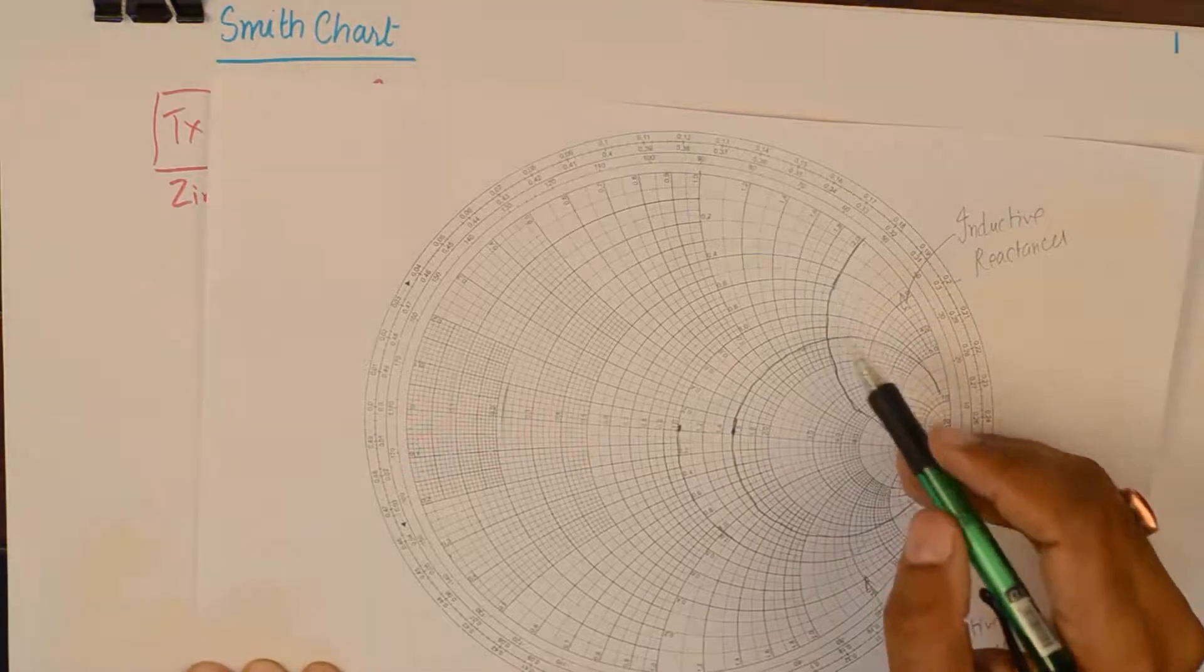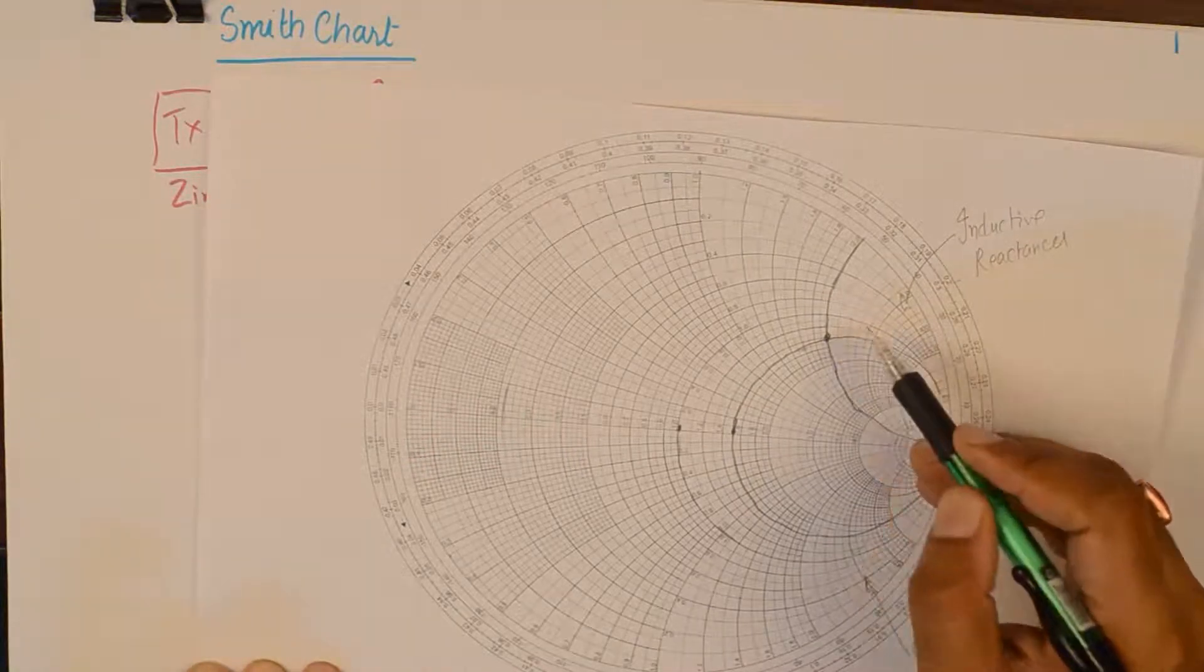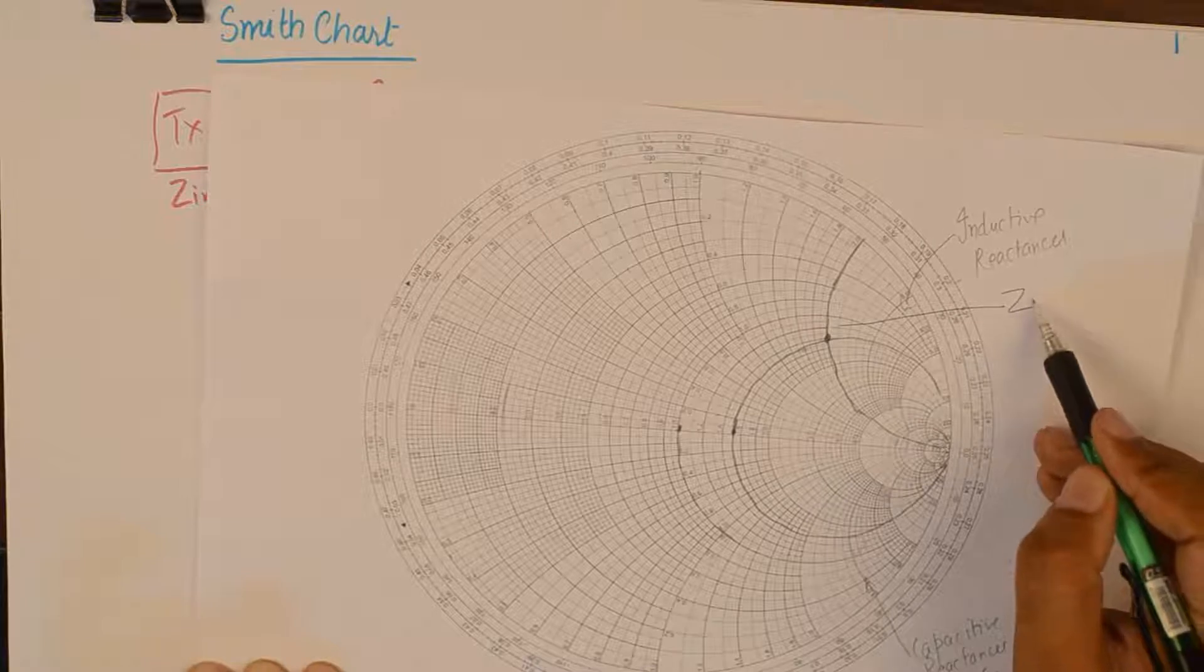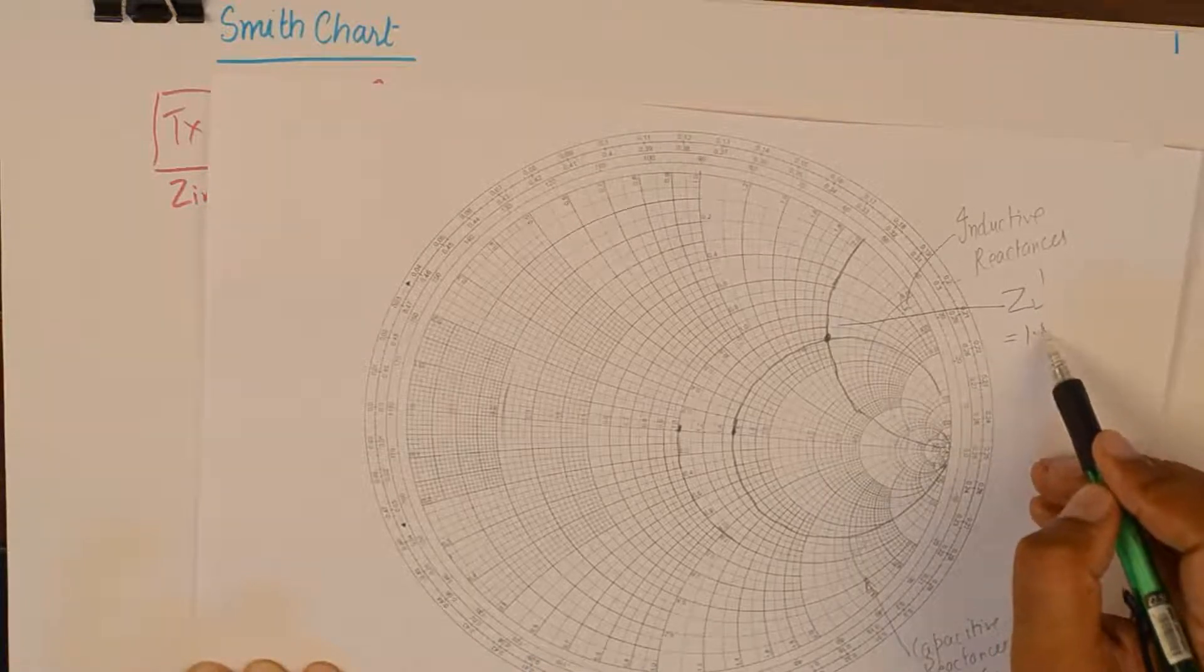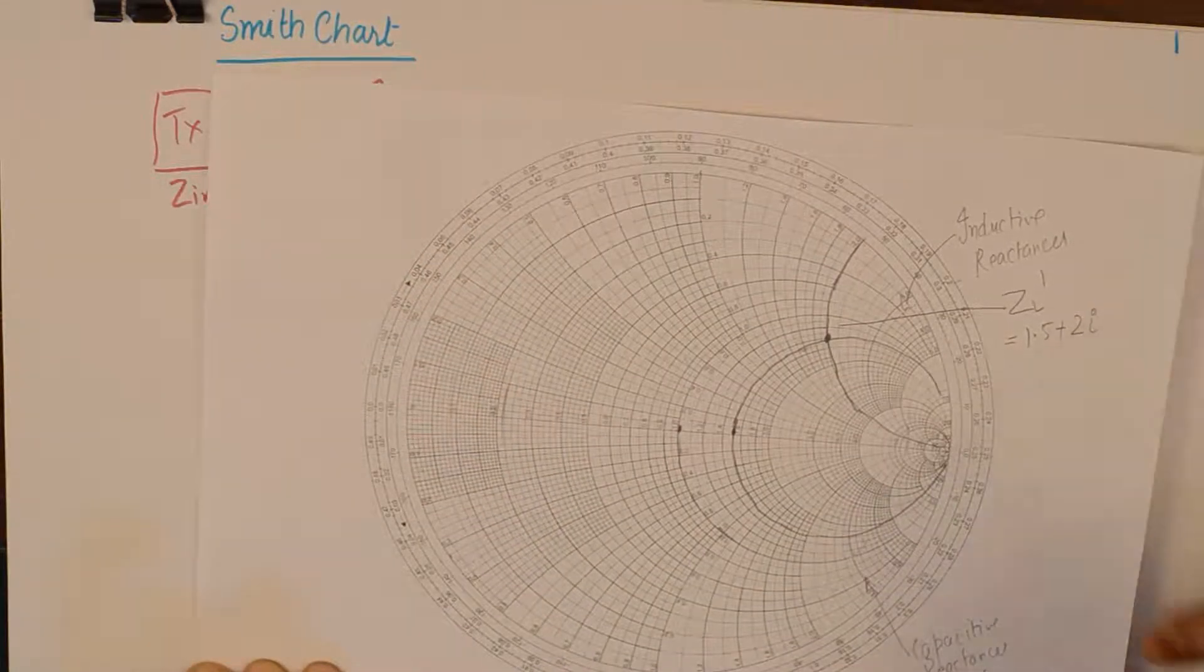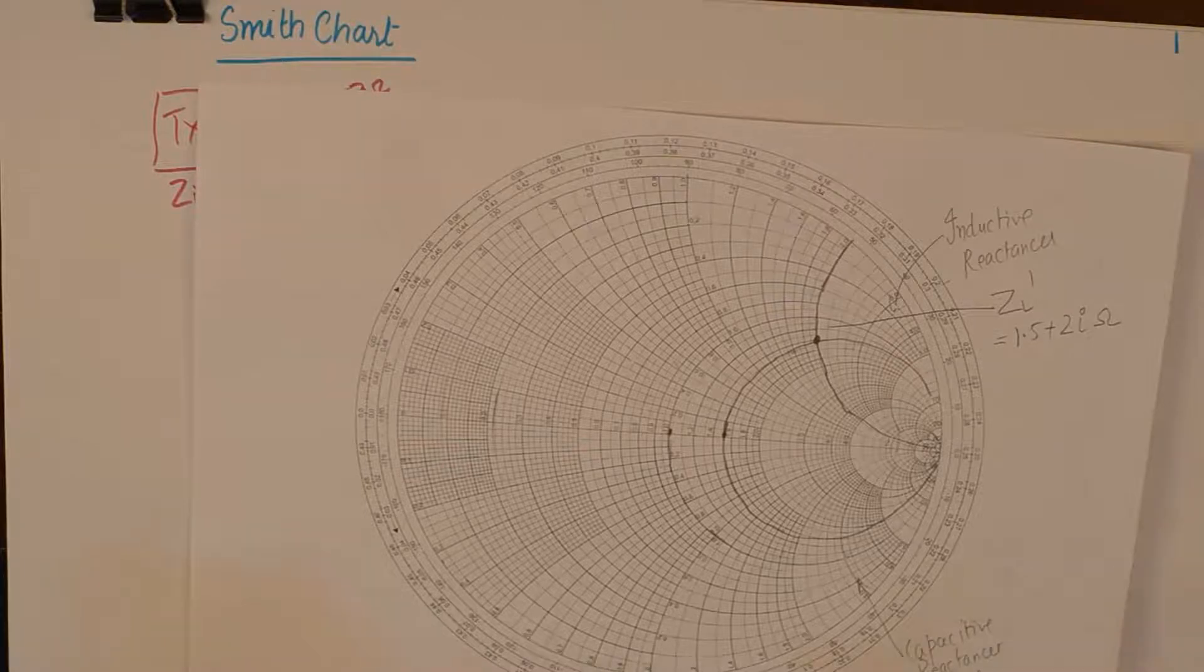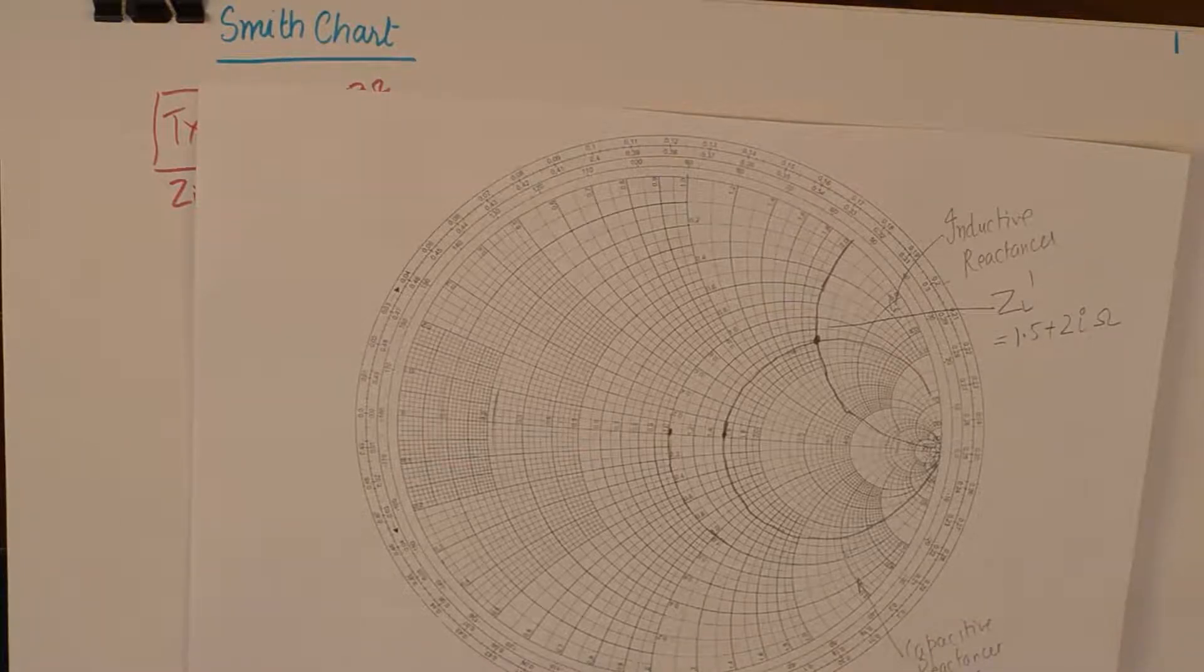Now, the reason we highlight these two is to find out the point of intersection and the point of intersection is this. And this point of intersection represents the normalized load impedance which is in our case 1.5 plus 2J. And this is how you plot the normalized impedance on Smith's chart which forms the foundation of finding the VSWR and reflection coefficient.